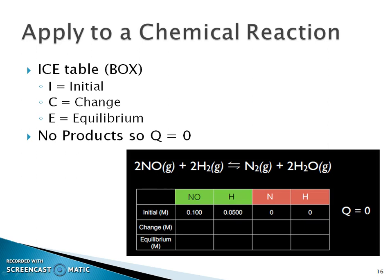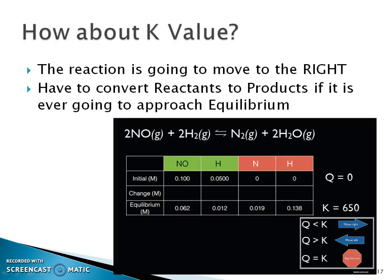ICE stands for Initial, Change, and Equilibrium. You need a balanced chemical equation, and then compare the K value to the Q value. If we know Q equals zero and the equilibrium concentrations give us K equals 650, then Q is less than K. We need to know those less-than and equal signs — if Q is less than K, the reaction shifts to the right.